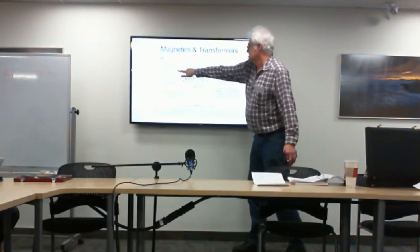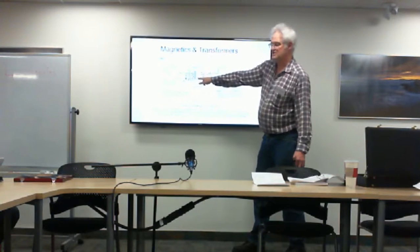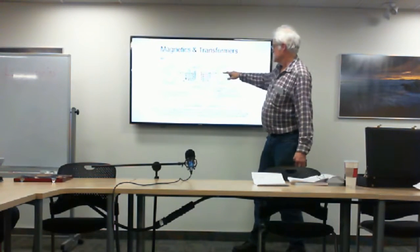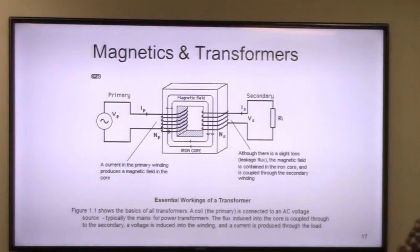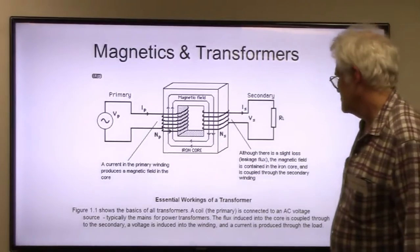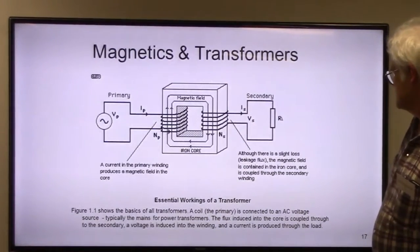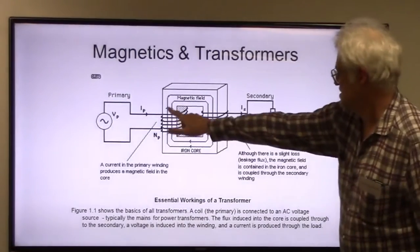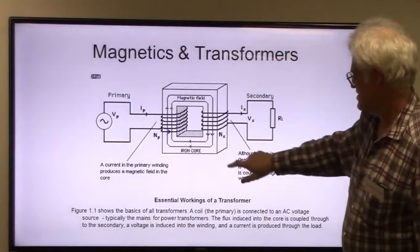A very simple transformer: there's our main inductor — the primary winding — which induces a current and voltage into the secondary winding. Note: transformers do not work with DC, only AC. With a common magnetic core, it helps transfer the magnetic field between the windings.